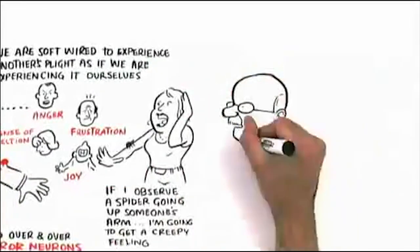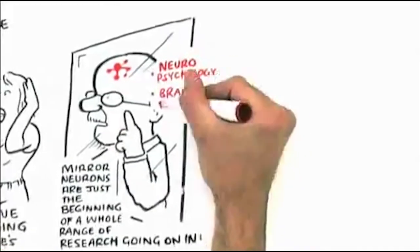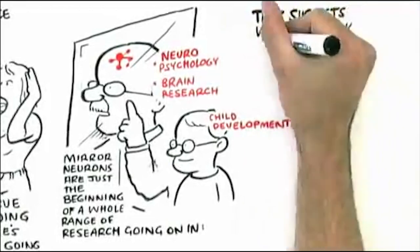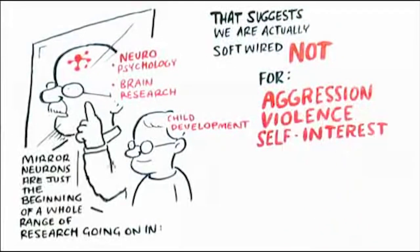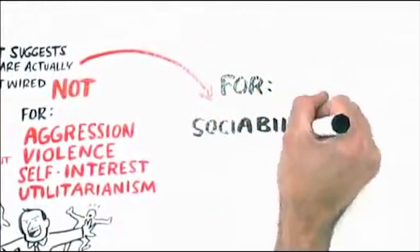But mirror neurons are just the beginning of a whole range of research going on in neuropsychology and brain research and in child development that suggests that we are actually soft-wired not for aggression and violence and self-interest and utilitarianism.